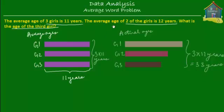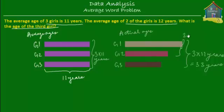The next thing we know is the average age of two of the girls is 12 years. If we take the first girl and the second girl, their average age is 12 years, which means the total age of the first girl and the second girl would be 2 times 12 years — so that is 24 years.